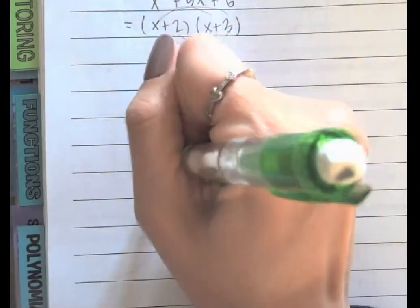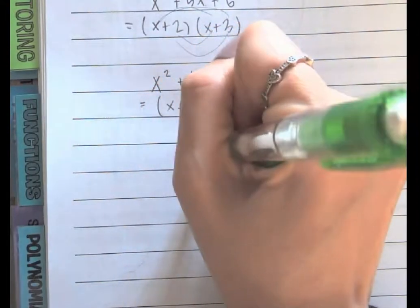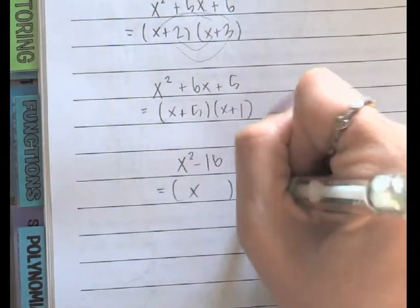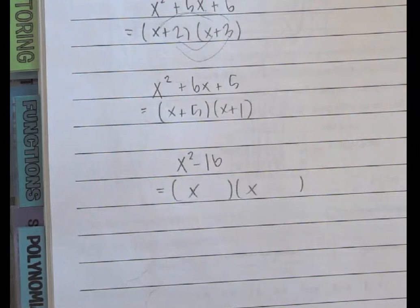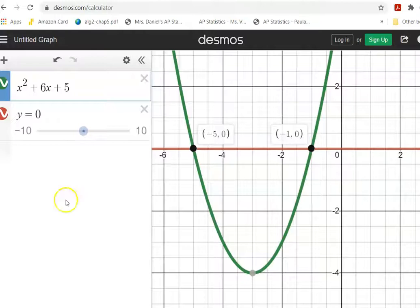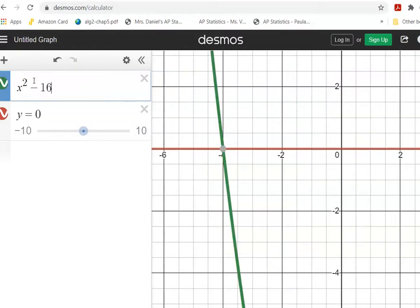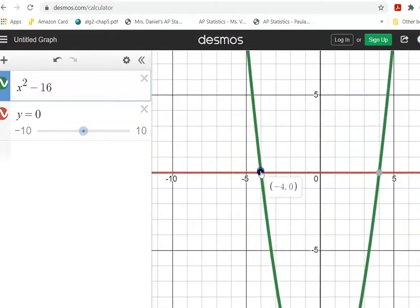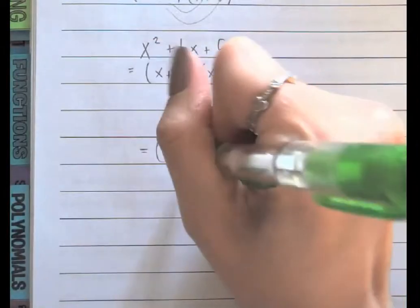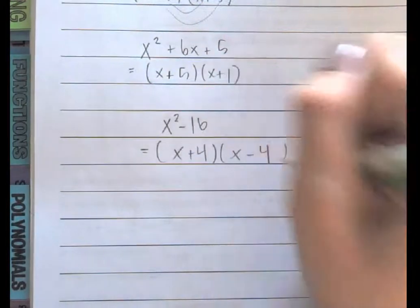Let's do x squared minus 16. Remember, these are special binomials, but they're still going to factor into two binomials with x's on the front. So we go back to Desmos. I'm going to highlight the last two terms and just type in minus 16. Now I have negative 4 and positive 4. So I come back to my binomials, and one of them is plus 4 and one of them is minus 4.